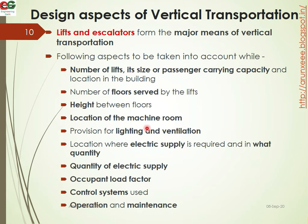Next is vertical transport — escalators and lifts. Key parameters include: number of lifts, size of lift, passenger carrying capacity, speed (high speed or slow speed), number of floors, height between floors, and location of machine rooms. Other considerations are ventilation, lighting, electrical supply quantity, control systems, and operation and maintenance.